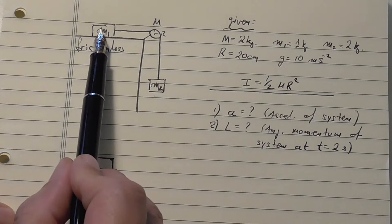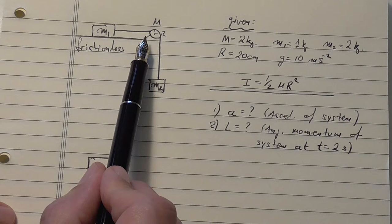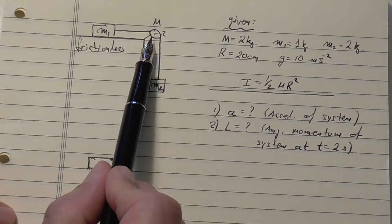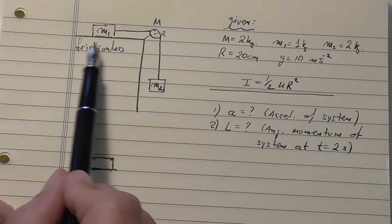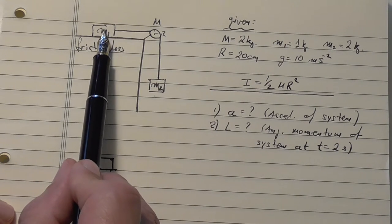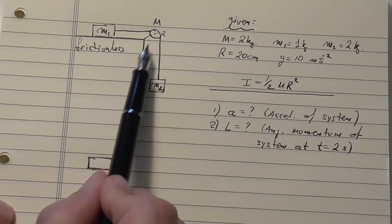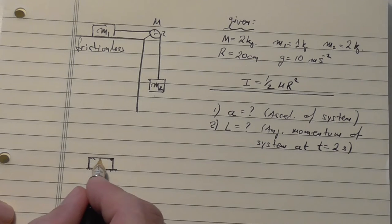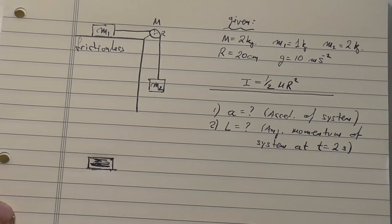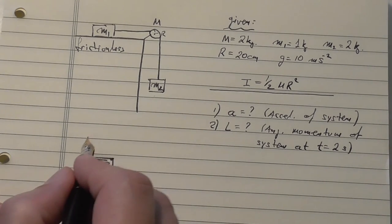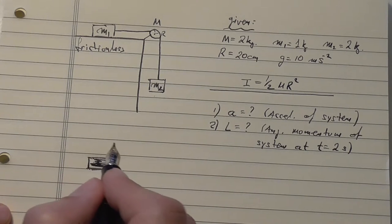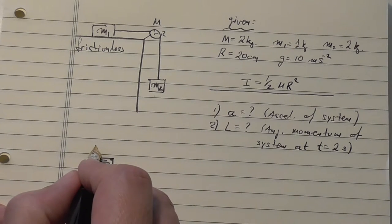Initially we start with zero velocity, zero acceleration, then the system picks up some speed and some rotational speed. There will be some angular momentum of three things: two masses and the solid disk. In the past, we were doing free body diagrams and applying Newton's laws, so this is what we will do here as well.